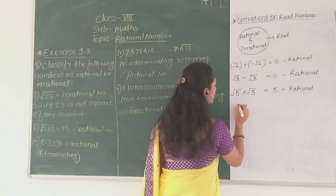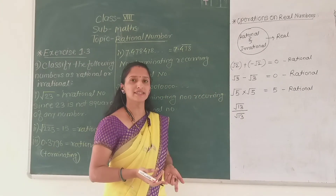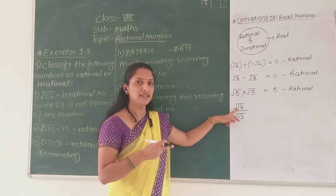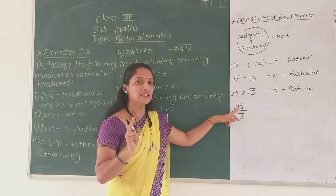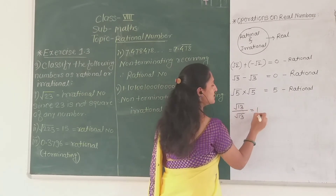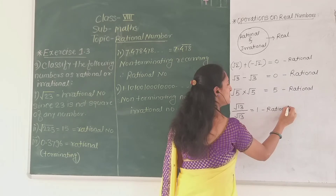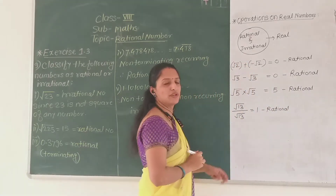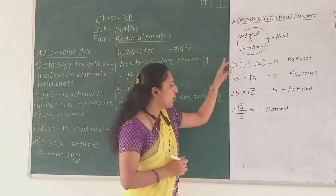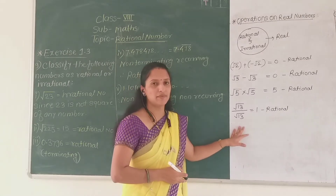Now let us look at division — square root of 13 divided by square root of 13. Root 13 is an irrational number since 13 is a prime number and not a perfect square. If I divide root 13 by root 13, the answer is 1. Is 1 an irrational number? No — 1 is a rational number. So from these four examples, we conclude that irrational numbers are not closed under all mathematical operations.